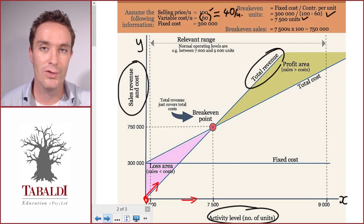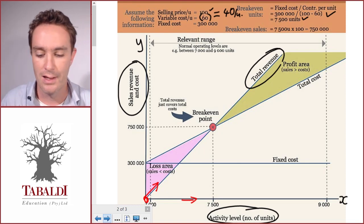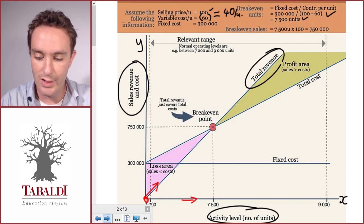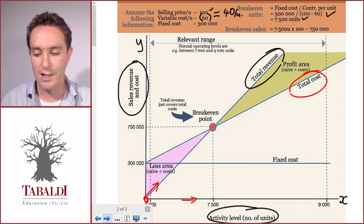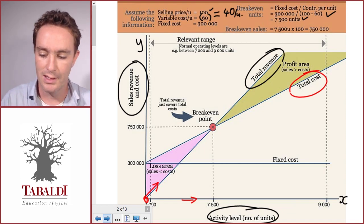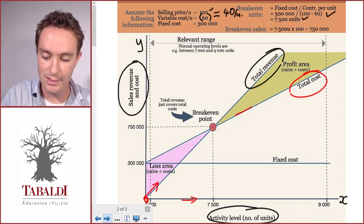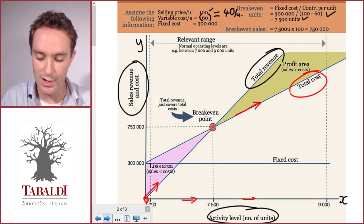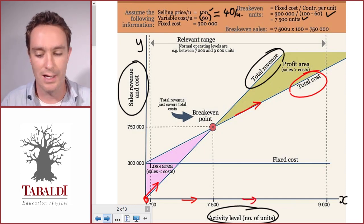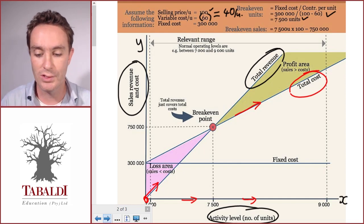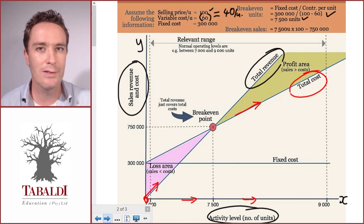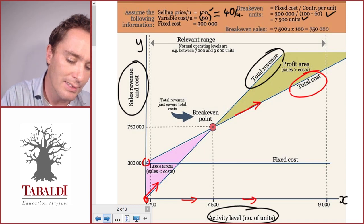If you look at the total cost, that's the second line here. What type of cost is this? It increases as we move to the right on the x-axis. As we produce and sell more units we spend more, so there must be some variable component.